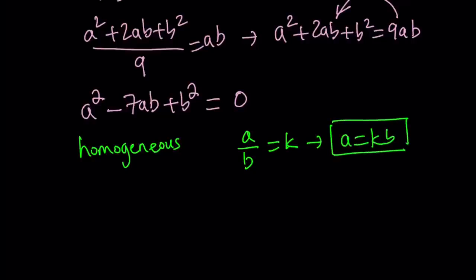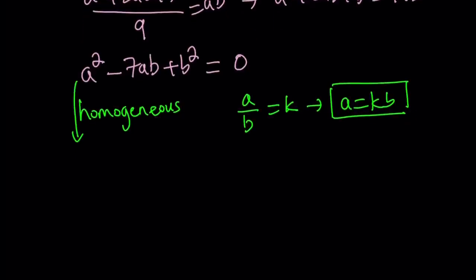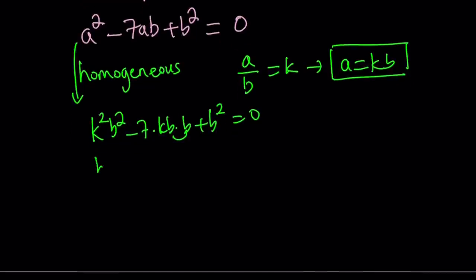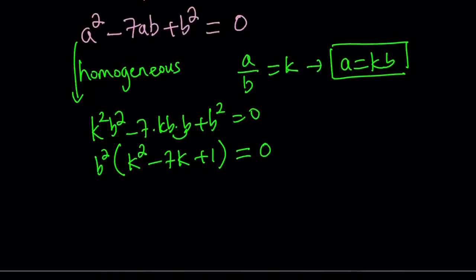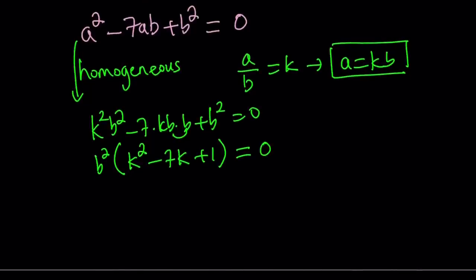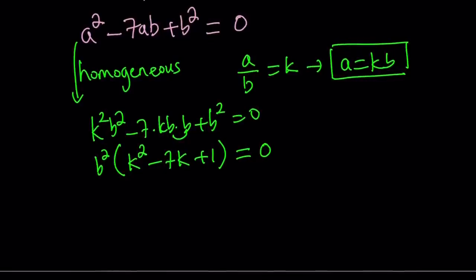So we're going to go ahead and replace a with kb everywhere. Let's do it. Replace a with kb: k²b² - 7kb·b + b² equals 0. And now b times b is b². So we can take out b². And inside the parentheses, we get k² - 7k + 1 equals 0. This is what makes it a homogeneous equation. As you can see, as soon as we made the replacement, we were able to take the b² out. And inside the parentheses, we only have a single variable. That's what is really cool about this.